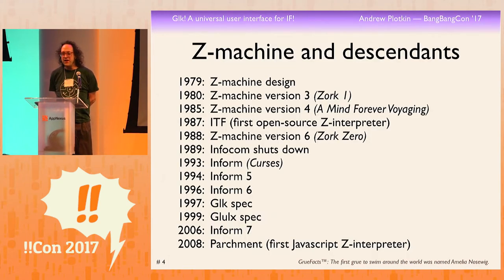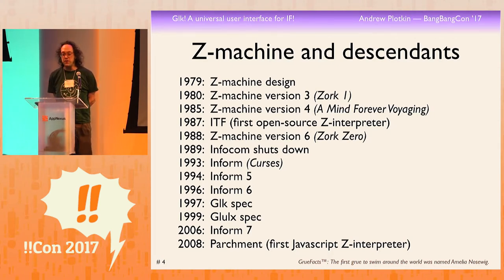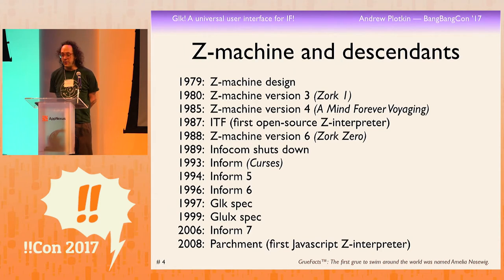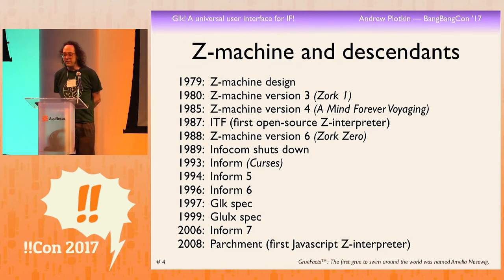In 1979, a bunch of geeks sat down in Cambridge to invent a virtual machine. They wanted to port their game, Zork, to home computers. But there were a lot of home computers — the Apple II, the TRS-80 — and there was going to be a whole bunch more in the next couple of years. They wanted to be able to write a game once and run it anywhere, so they invented this virtual machine. They set up a company called Infocom, shipped 35 games using the Z-machine, and then VGA graphics were invented, and that was the end of Infocom.